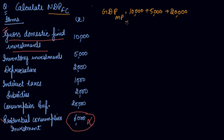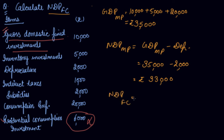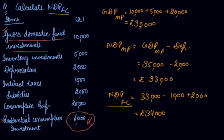This gives you 35,000 as GDP at MP. To calculate NDP at MP, subtract depreciation: 35,000 − 2,000 = 33,000. Then from NDP at MP to NDP at FC, subtract net indirect taxes and add subsidies, giving you rupees 34,000 as NDP at FC.